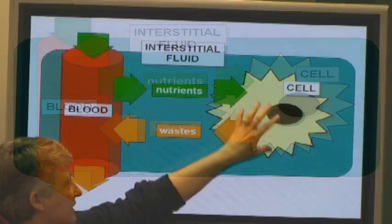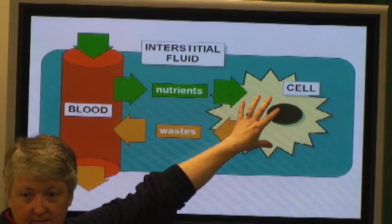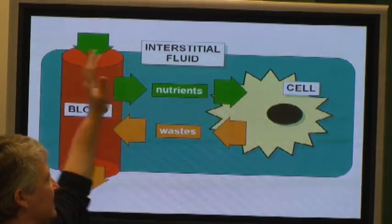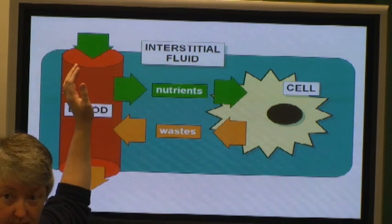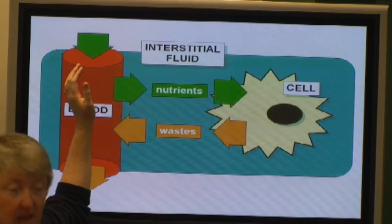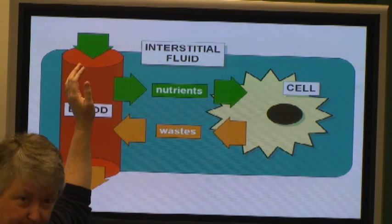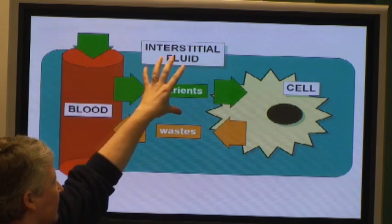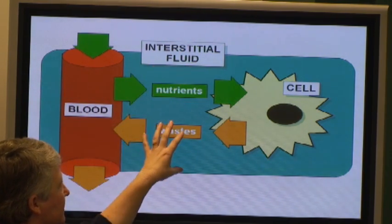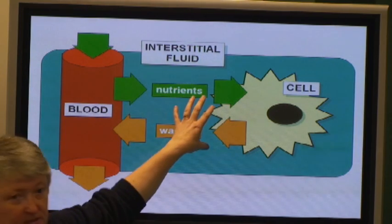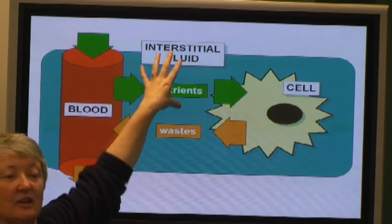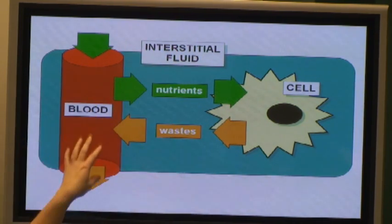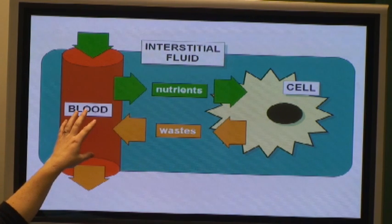We have intracellular fluid, and then everything else is extracellular fluid. The bloodstream is extracellular because it's outside of cells. The fluid in between the blood vessels and the cells is the interstitial, or tissue fluid. And then the fluid portion of the blood is the plasma.